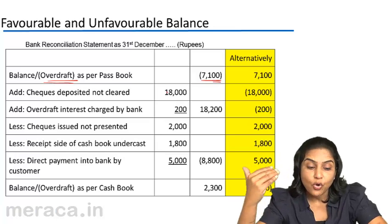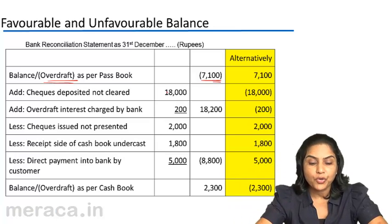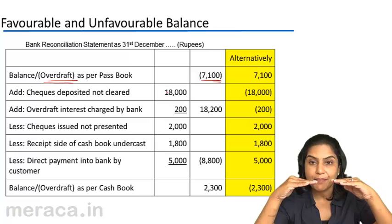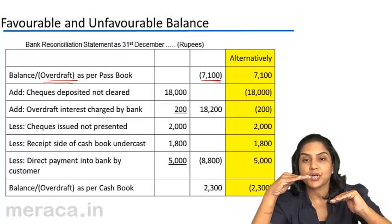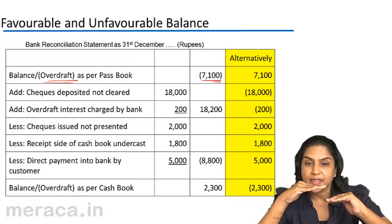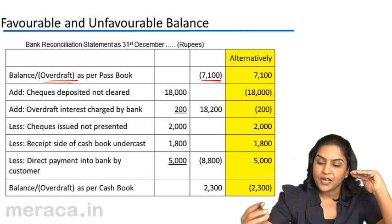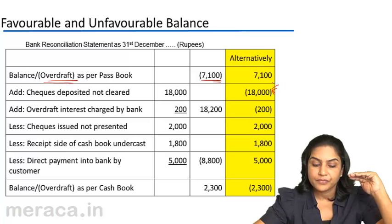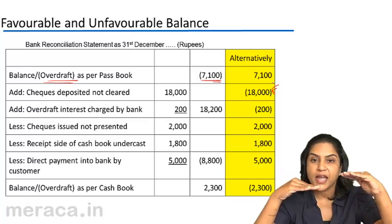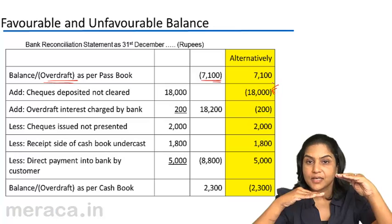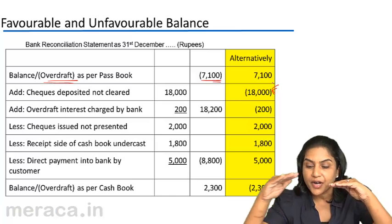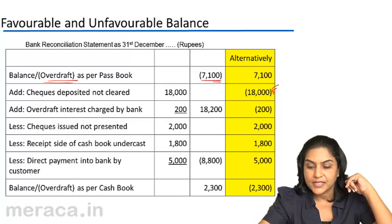We have added 18,000 to minus 7,100. From the overdraft point of view: checks deposited into an overdrawn account — the overdraft balance in the cash book comes down. Starting from the passbook, to arrive at the cash book we would deduct. Alternatively, the cash book balance goes up when checks are deposited and the passbook balance is down — starting from the passbook, ordinarily you would add, but because it is an overdraft you are deducting. That's exactly what we have done.